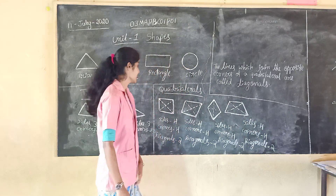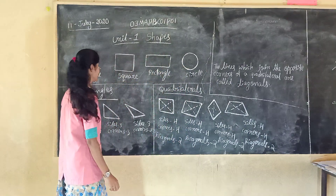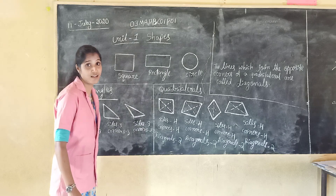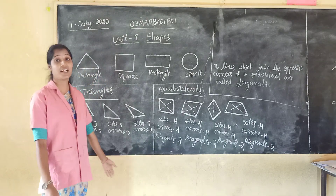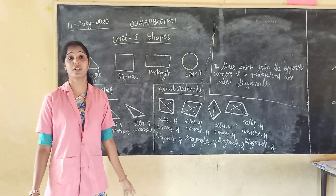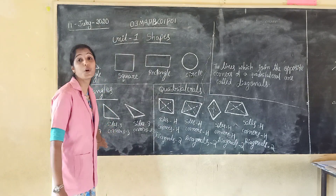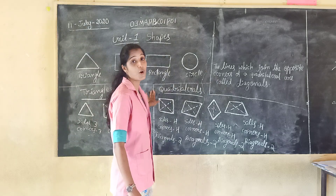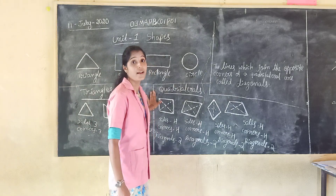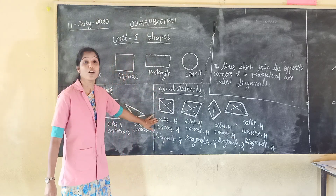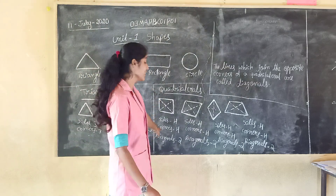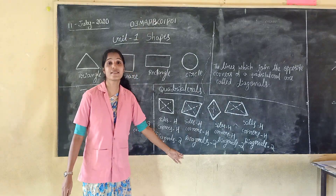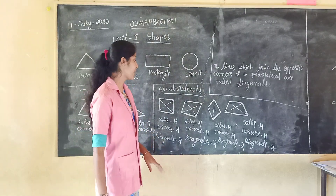Understood? In the triangle, how many sides? Three sides, and corners: three. No diagonals in the triangle. Quadrilateral: how many sides? Four sides. And corners: four. And diagonals: two.